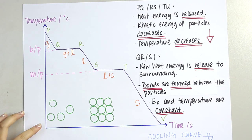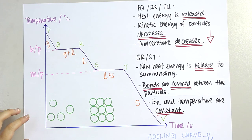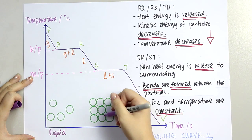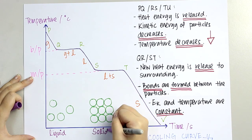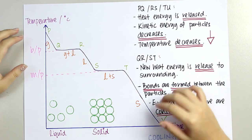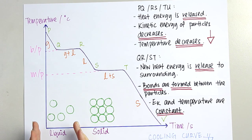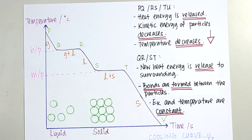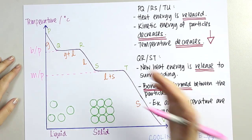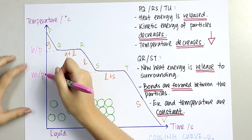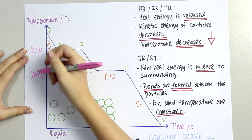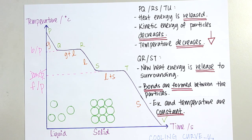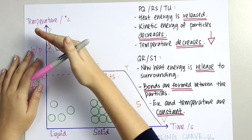As we know, this state of matter we call liquid, and this state of matter we call solid. According to this cooling curve, the heating curve goes up whereas the cooling curve goes down.